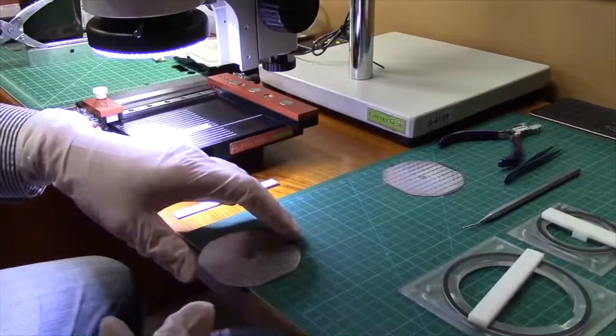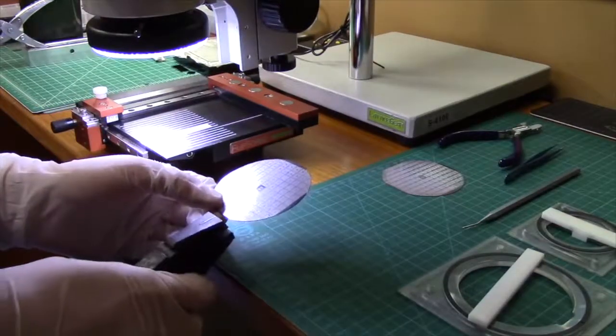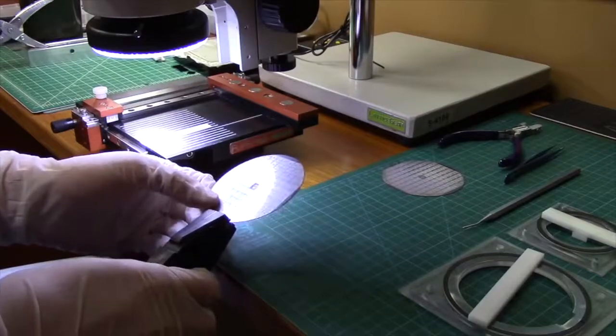Once the wafer has been reduced, the Flip Scribe's sample holders can be used to keep these pieces secure as we reduce it further.